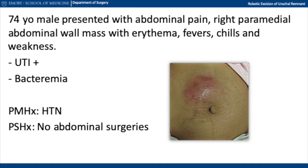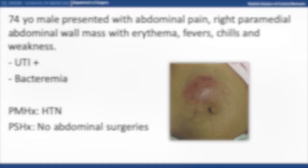The patient is a 74-year-old male who presented with abdominal pain, a right paramedian abdominal mass that was erythematous. He had fevers, chills, and weakness. A urinary examination revealed a UTI, and blood cultures showed bacteremia. His past medical history was only notable for hypertension, and he had no prior abdominal surgeries.